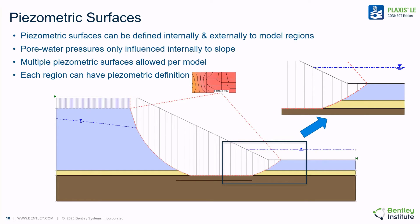Multiple piezometric surfaces can be defined internally and externally to model regions. The pore water pressures defined by these piezometric surfaces can be applied to one or more regions in the slope. Therefore, each region can theoretically have its own definition of piezometric head that varies laterally in the model.